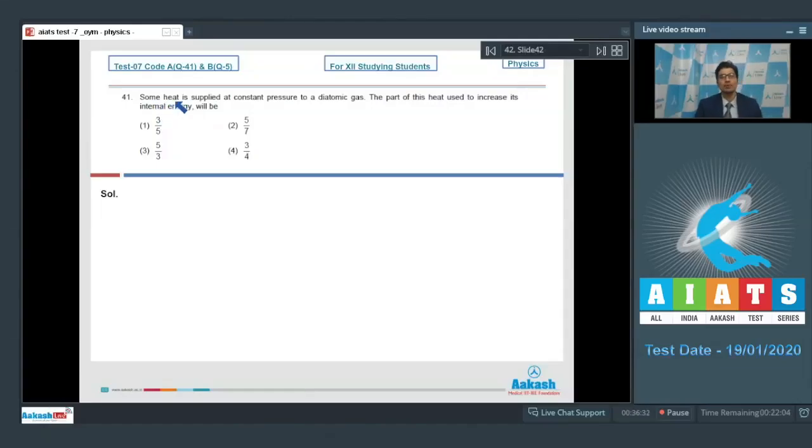Question number 41 says some heat is supplied at constant pressure to a diatomic gas. The part of this heat used to increase its internal energy will be.